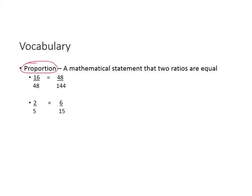Now if you look at this, you're going to see this compares a lot with equivalent fractions. For example, 16 over 48 is equal to 48 over 144. We know that if we take 48 times 3, we're going to get 144. And if we take 16 times 3, we're going to get 48.